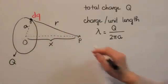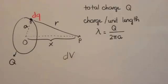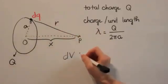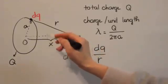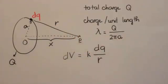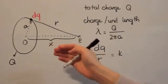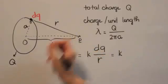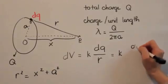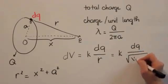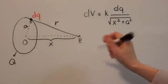Suppose that we can divide the ring into equal infinitesimal charges that I call dq. What is the electric potential at point P due to a single dq? We can write dV, the electric potential due to the single dq, equals k dq over R, where R is the distance between dq and point P.